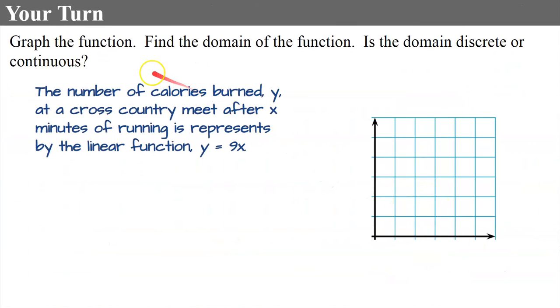Now it's your turn. I would like you to graph this function that is described in words. I want you to find the domain of the function and identify if it is a domain that is discrete or continuous. So the real world example I have for you is the number of calories burned y at a cross country meet after x minutes of running is represented by the linear function y equals 9x. I would like you to pause here, graph the function, find the domain, and tell me whether or not it is discrete or continuous. Go ahead and pause and come back when you're done.